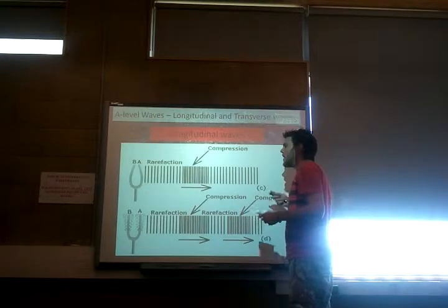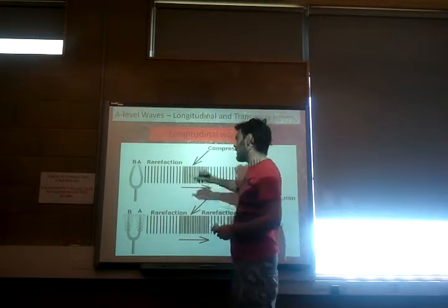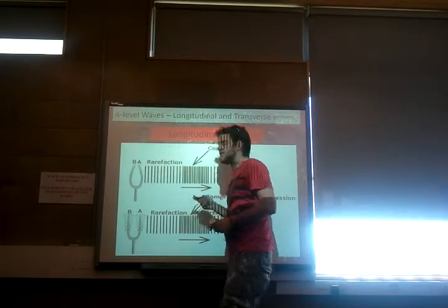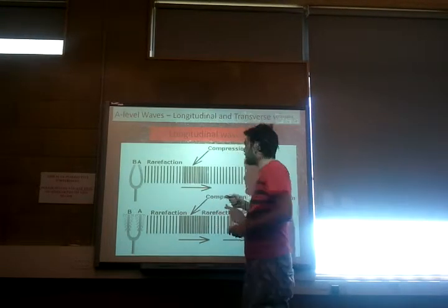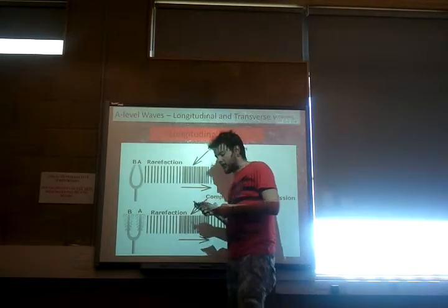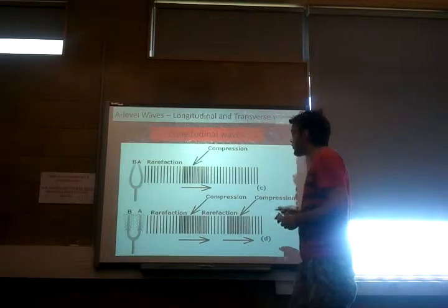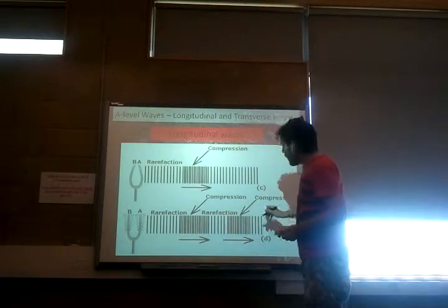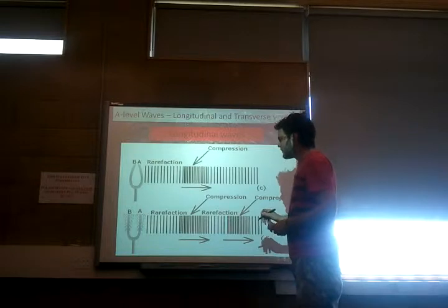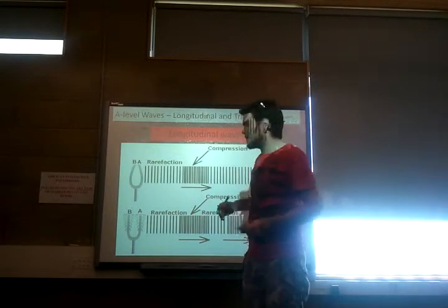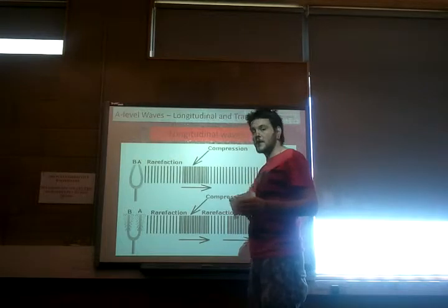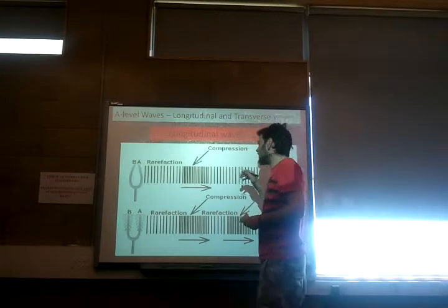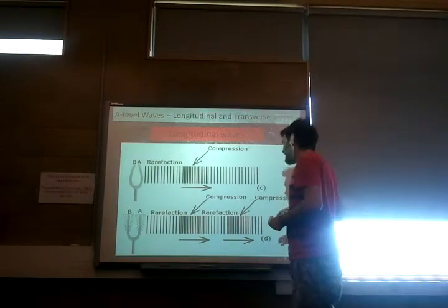If you imagine a transverse wave where we have movement up and down, the compression would be our peak and the rarefaction would be our trough - our places of high pressure and low pressure. The wavelength for a longitudinal wave is measured from the middle of one compression to the middle of the next compression. As long as it's taken from the same part of one wave to exactly the same part of the next wave, that gives you your wavelength.